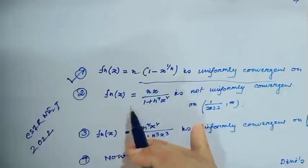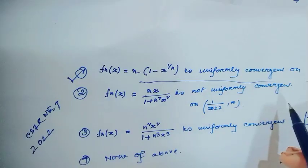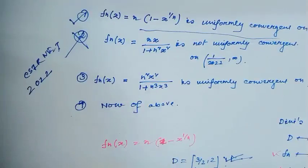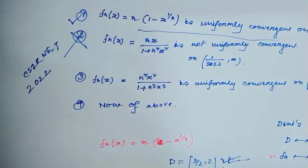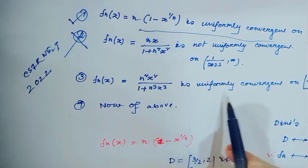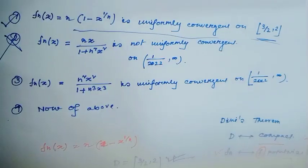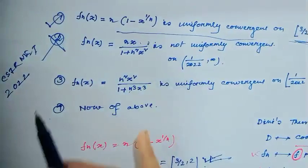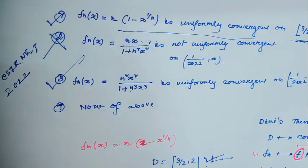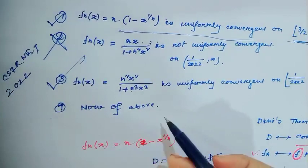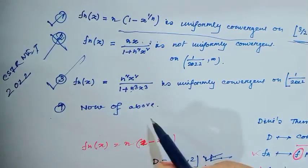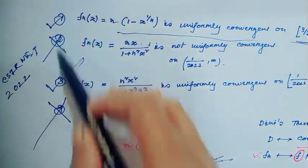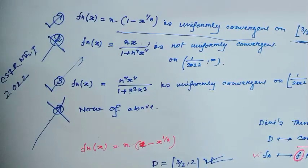So option 2 indicated this is not uniformly convergent, which means option 2 is a wrong option. Option 3 implies this function is uniformly convergent on this domain, and the proof is the same as above, so option 3 is uniformly convergent. Option 4 stated none of the above, which is also a wrong option. Therefore, options 1 and 3 are the correct options.